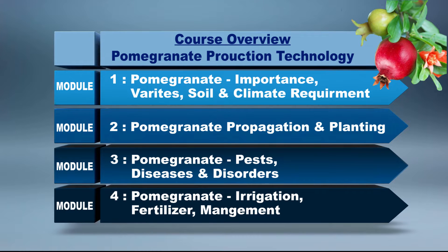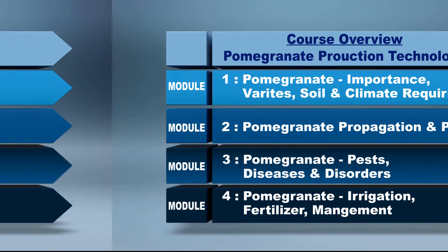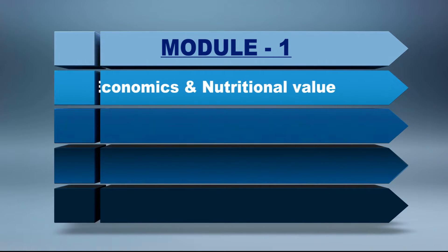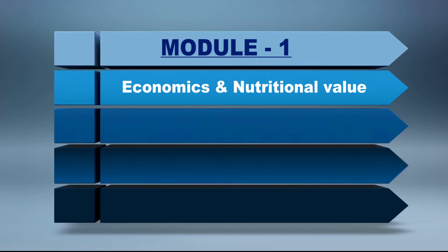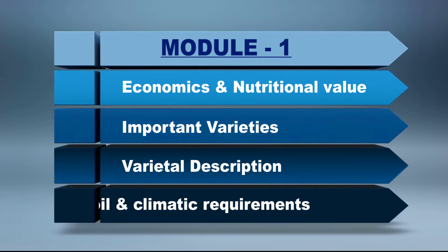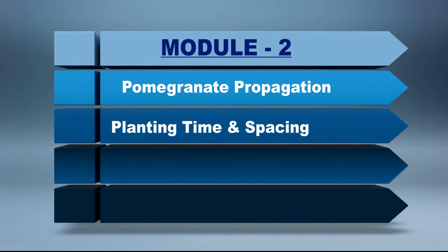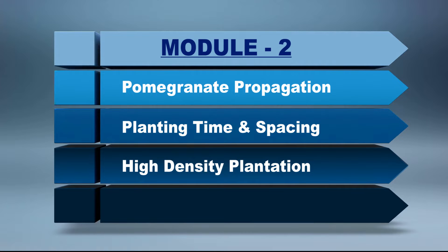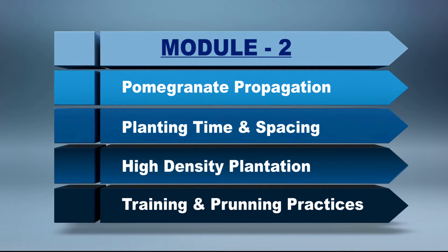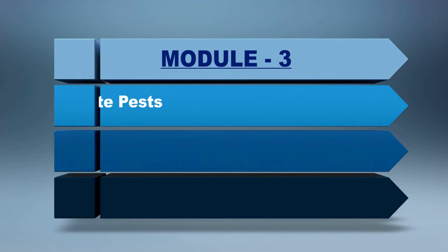Eight modules are independent video lectures by eminent experts in the field, and four modules will include assignments and quizzes. Out of the eight video lecture modules, the initial four modules will discuss pomegranate production technology. The first module will cover economic and nutritional importance of pomegranate, important varieties, their description, as well as soil and climatic requirements of the pomegranate crop. In the second module, we will study propagation methods, planting time and spacing, and high density plantation along with training and pruning practices.